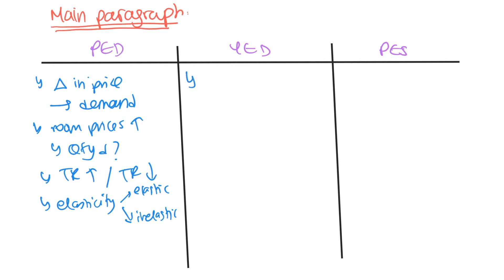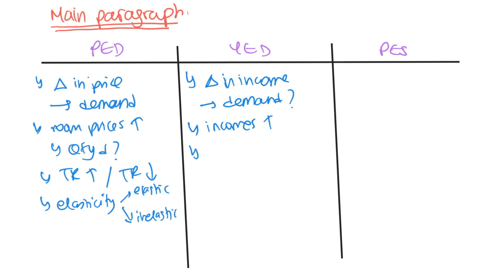Moving on to YED — this measures how a change in income will affect quantity demanded. For example, if incomes are going up, what happens to quantity demanded? Tourism should be a normal good, where if income goes up you would expect quantity demanded to rise. You could mention that a normal good has a positive YED value. The main point is the link between incomes and quantity demanded, and because tourism is a normal product, demand for the holiday resort and its rooms would rise.